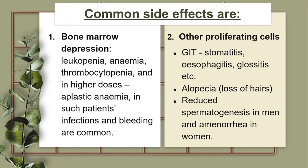2. Other proliferating cells. 3. GIT — stomatitis, esophagitis, glossitis, proctitis can be painful, and diarrhea and ulcer along the gut are common.